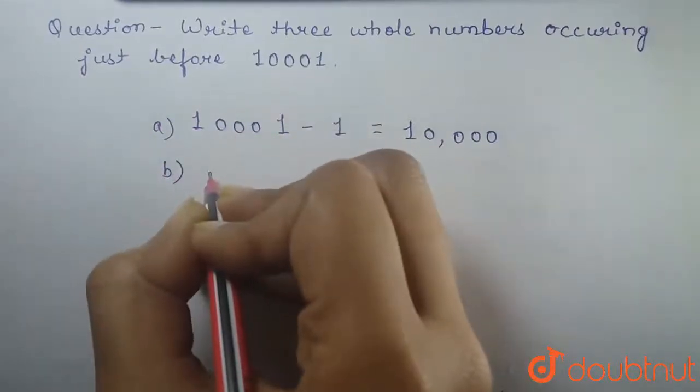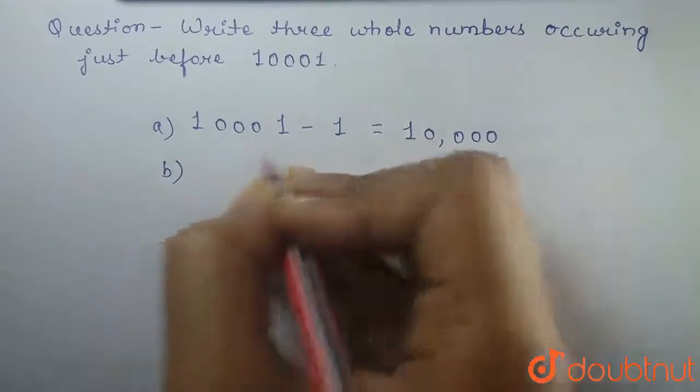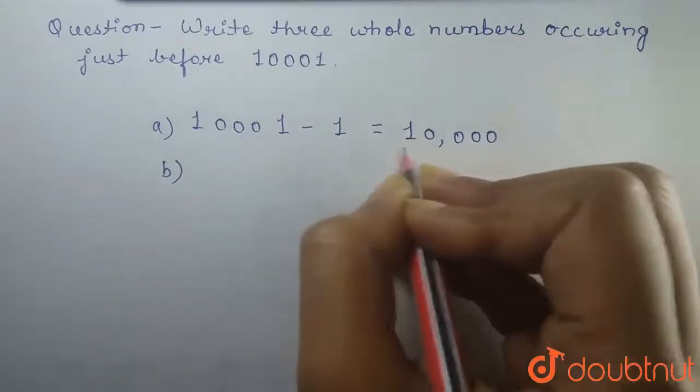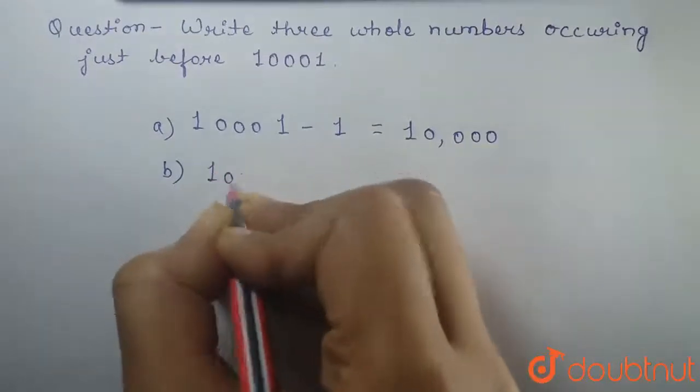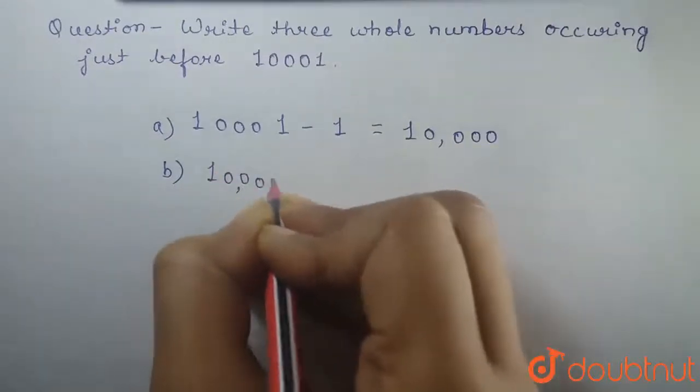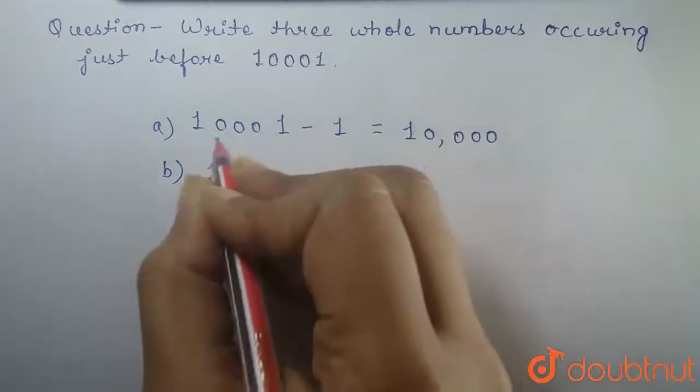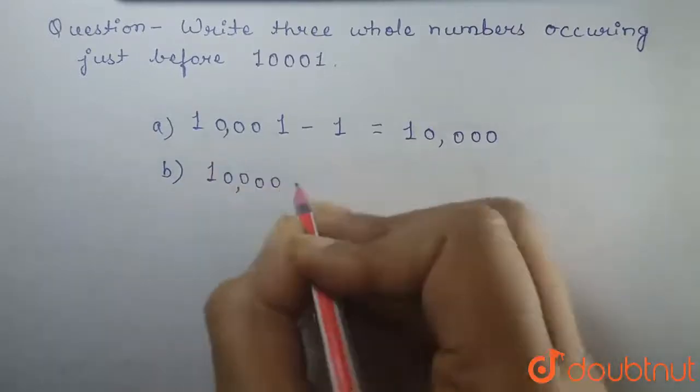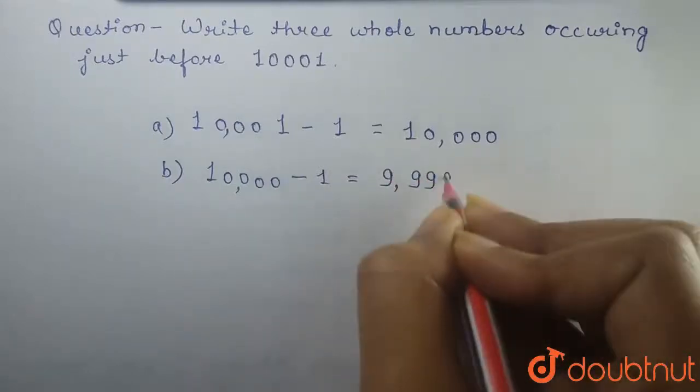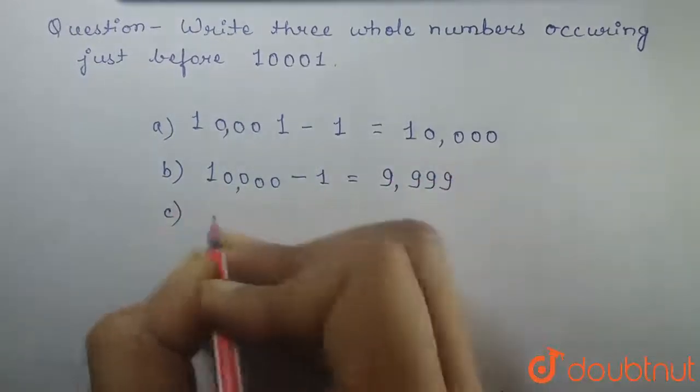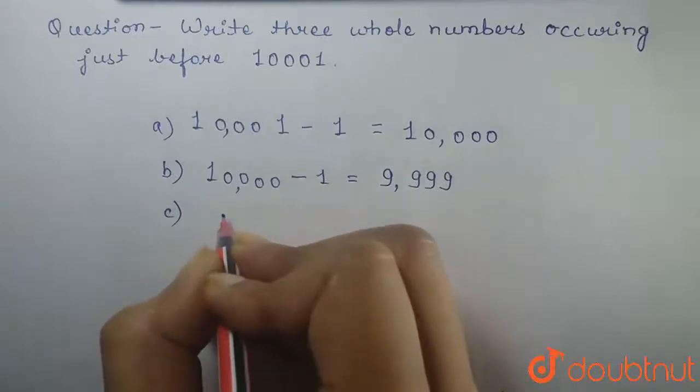Second step: We can easily find a whole number occurring just before 10,000 by subtracting one from 10,000. So here we subtract one from 10,000, which gives us 9,999.